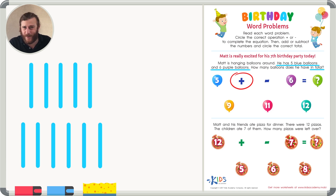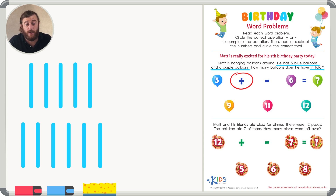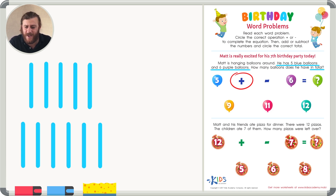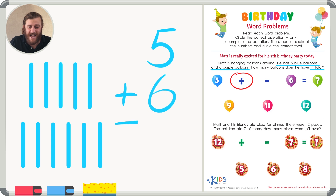We're going to be adding in this problem. The word 'total' usually gives you a clue that this is an addition problem. Let's count our balloons. I know we have five in the top row — one, two, three, four, five — but let's keep counting to find the total: six, seven, eight, nine, ten, eleven. I think there are eleven balloons. Let's write five plus six and check one more time.